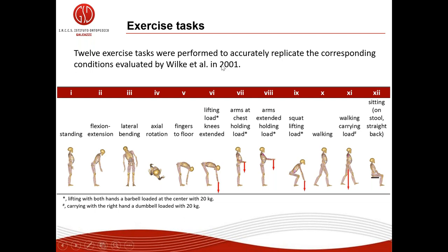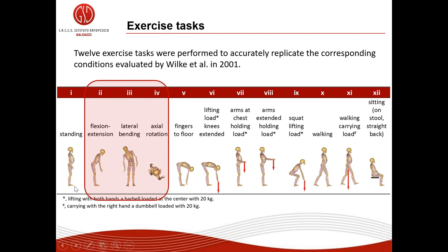We instructed the subject to perform 12 exercise tasks accurately replicating the corresponding conditions evaluated by Wilke in 2001: standing, flexion-extension, lateral bending, axial rotation, fingers-to-floor, lifting with knees extended, holding load near chest, holding load 60 cm away from chest, holding load in squat position, walking, walking carrying load, and sitting on a stool. For the three motion conditions, we evaluated disc pressure in a continuous dynamic fashion — the relation between pressure and the angle between thorax and pelvis.